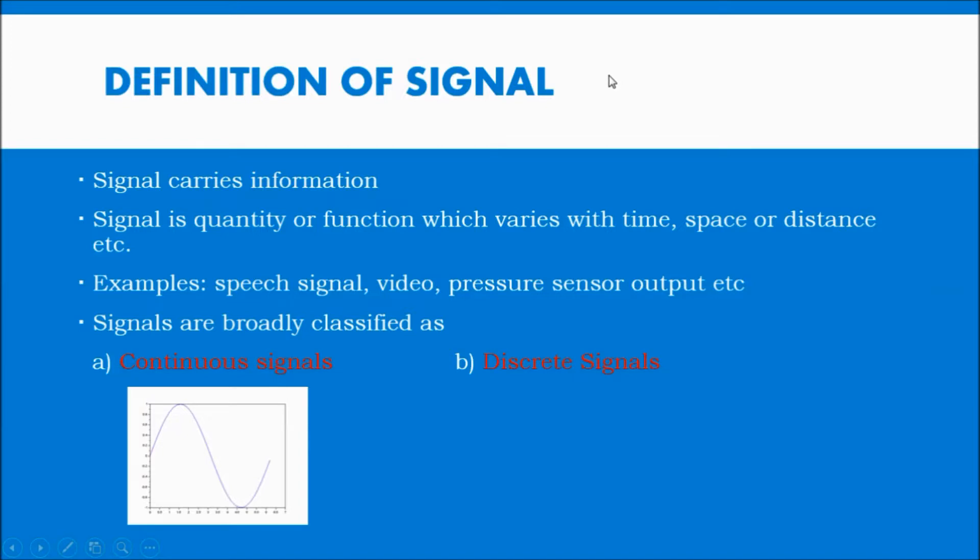First of all, the definition of signal. You can say signal is nothing but which carries the information. Also it is defined as the quantity or function which varies with time or space. Examples are given like speech signal, video, pressure, sensor output, etc.